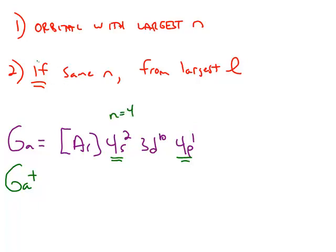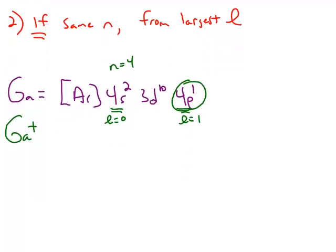So we have to apply the second rule, which is the largest value of l. And we know that the s orbital has l as 0, and the p orbital l value is 1. So we're going to remove the electron from the 4p to form the gallium cation.